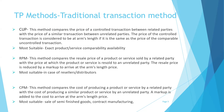Another method prescribed is the resale price method. The resale price method compares the resale price of a product or service sold by a related party with the price at which the product or service is resold to an unrelated party. The resale price is reduced by a markup — also known as the gross profit margin — to arrive at the arm's length price. This method is most suitable in the case of resellers or distributors.